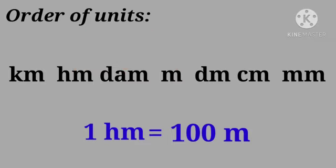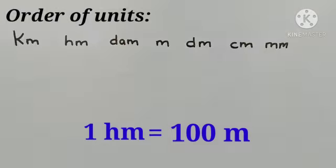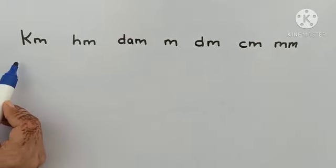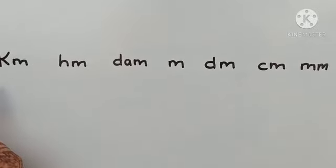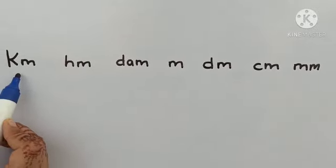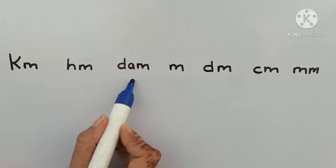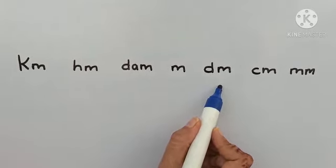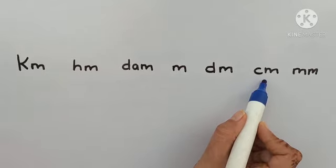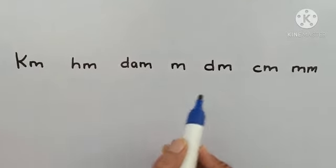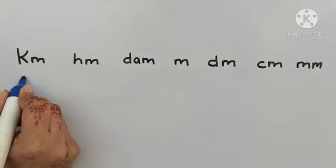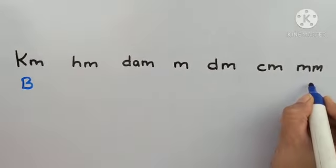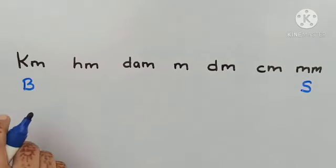Let us solve an example. First of all, we are going to write the order of units as kilometer, hectometer, decameter, meter, decimeter, centimeter and millimeter. Now we know that kilometer is bigger unit and millimeter is smaller unit.